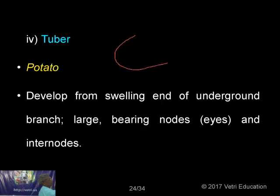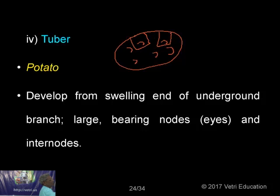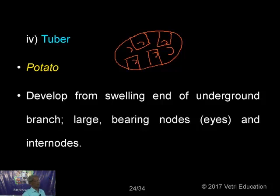The structures you see on the surface of the potato are the nodes — called the eyes of the potato. When you cut the potato, each piece containing at least one eye will produce one plant. Eyes represent nothing but the nodes. When you take a potato, cut it into small bits, make sure each bit contains at least one eye — from that, a plant will emerge when put in the soil.